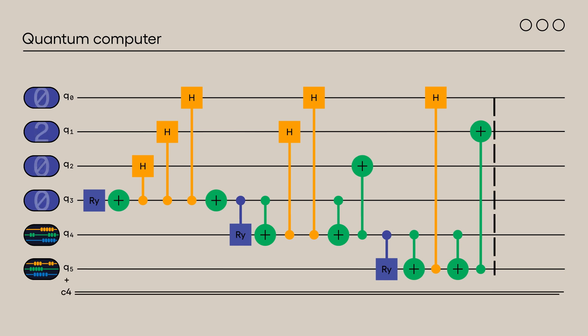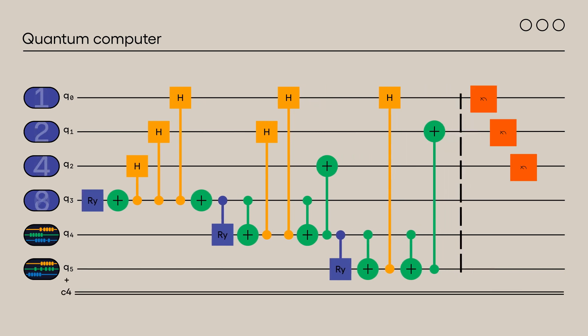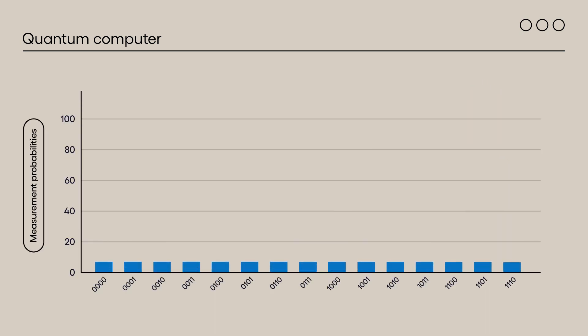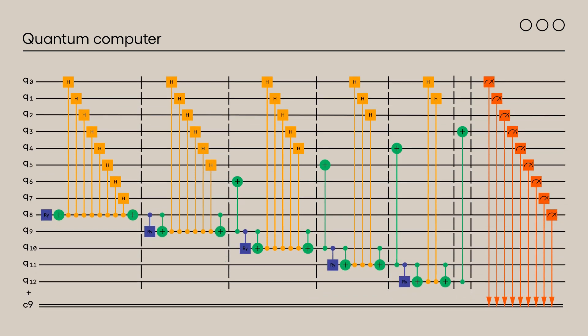All that remains is to add the measurement operations on q0 to q3. The superposition of states prepared by qubits q0 to q3 corresponds to a uniform distribution on the 0 to 14 states. By applying this algorithm to the number 365, we obtain the following quantum circuit.